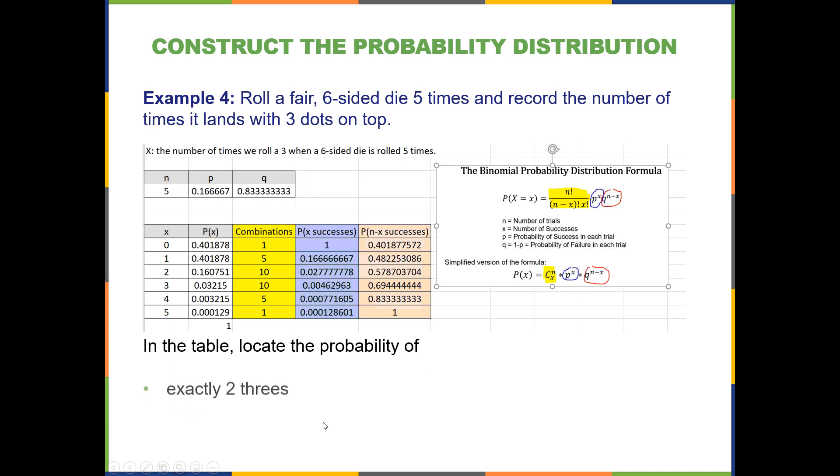locate the probability of exactly two threes. So let's say we got two successes. We rolled a three two times out of the five rolls. We can look at this table right here and know what that probability is. So here's two successes, exactly two, and here's the probability that corresponds with that number of successes. So the answer is 0.1608. So P(2), this is shorthand notation that just means exactly two successes, is 0.1608.